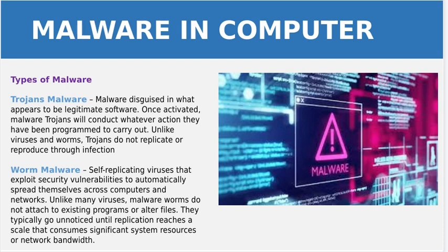Trojan malware — historically named after the Trojan horse — disguises itself as legitimate software. Once activated, Trojans carry out whatever actions they have been programmed to perform, such as automatically shutting down the system or opening a browser automatically. It is a hidden software file or code in the computer system through which unauthorized or illegal actions can be carried out on the computer system.